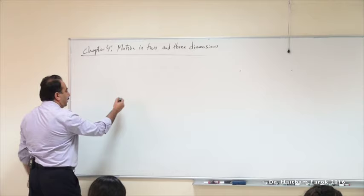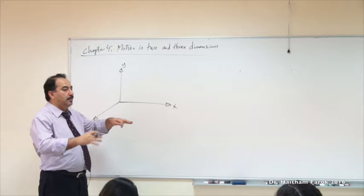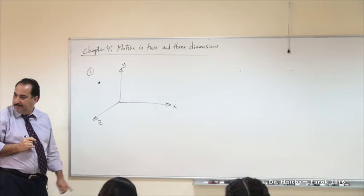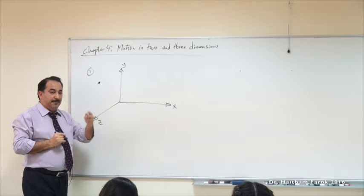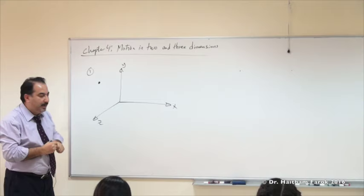Let's say this is the X axis, this is the Y axis, and this is the Z axis. I have an object moving in three dimensions. Now, if I ask you to define this position, remember we have two systems of coordinates: the Cartesian and the polar. That's why we studied vectors before this chapter, because we need it.